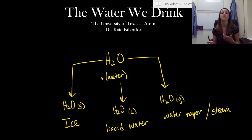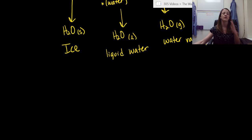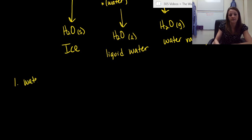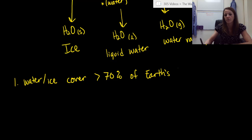So from here on out for the rest of the module, I want you to be very comfortable with the words ice, liquid water, water vapor, and steam. Now for the rest of the video, I just want to hit you with three important facts — things I expect you to know from here on out. The first is that water and ice cover more than 70% of Earth's surface. Our planet is primarily water.